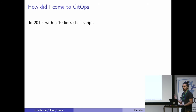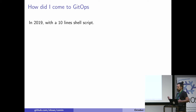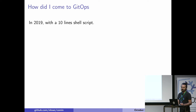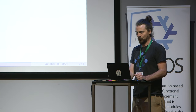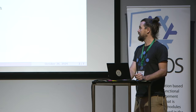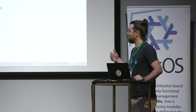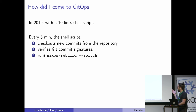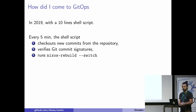The core idea of GitOps is having a Git repository that contains all configuration — a NixOS configuration file for all NixOS machines — and an automated process that ensures all these NixOS configuration files are deployed on your NixOS machine. How did I come to GitOps? Of course, with a shell script. Five years ago, with some friends, we deployed a NixOS server to host a NixOS instance, and we wanted to automatically deploy our changes to this server.